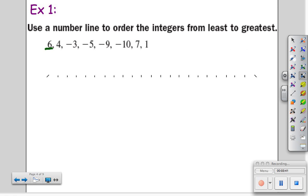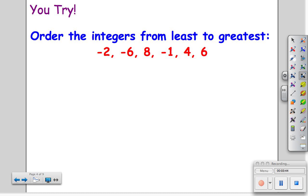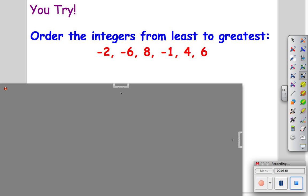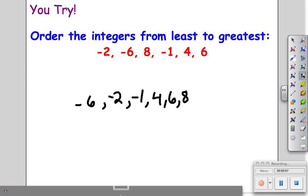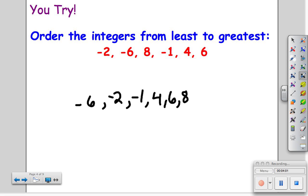You try an example. Pause your video and order these numbers from least to greatest. Got your answer? Did you get negative 6, negative 2, negative 1, 4, 6, and 8? If so, great job, go on to the next problem. If not, review the previous problem and try using a number line.